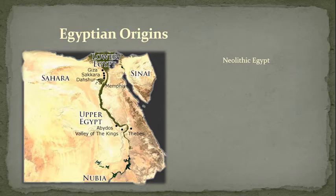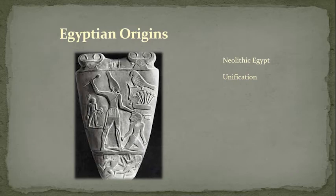Unification is going to occur in Egypt incredibly early — like 3050 BC — while the Mesopotamians were still living in city-states. Sargon of Akkad wouldn't come for another 400 to 600 years. The Egyptians may have gotten a slightly later start in civilization than the Mesopotamians, but they unified really, really early.